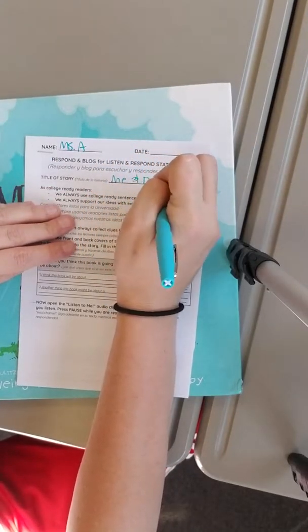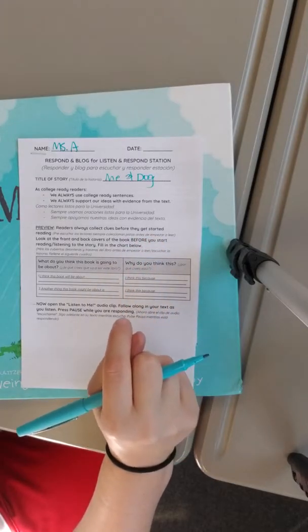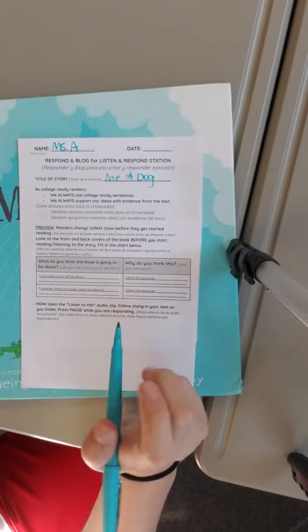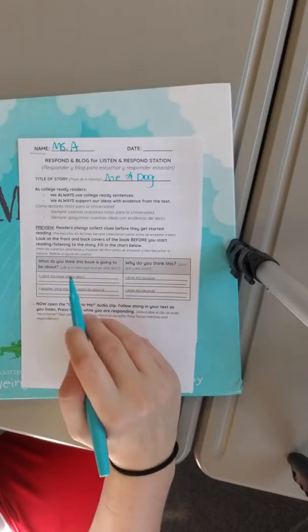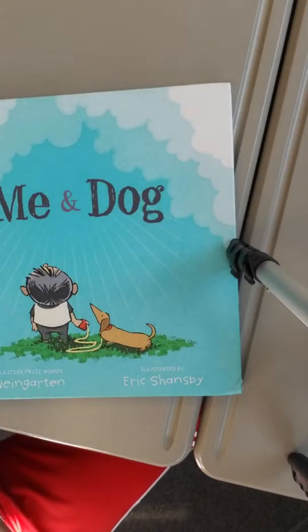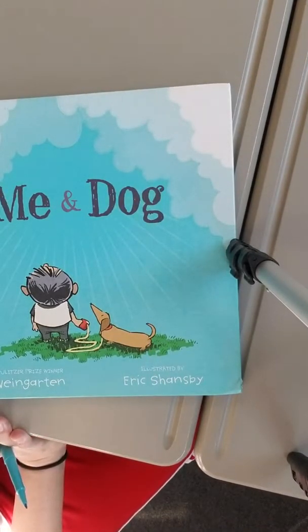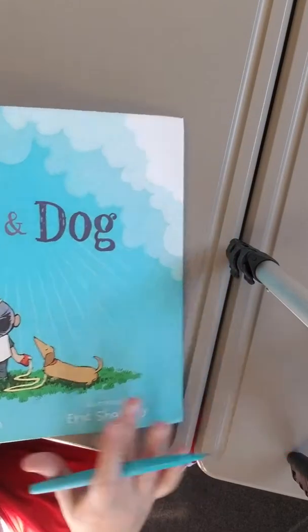Readers always collect clues before they get started reading. Look at the front and back covers of the book before you start reading or listening to the story, and then fill in the chart below. What do you think this book is going to be about and why do you think this?